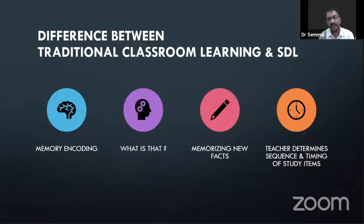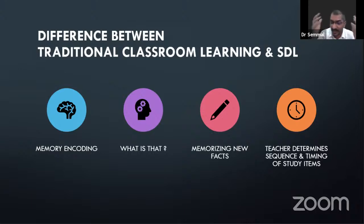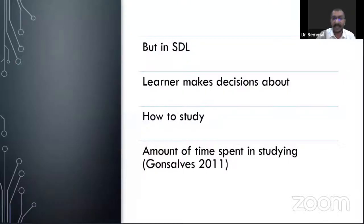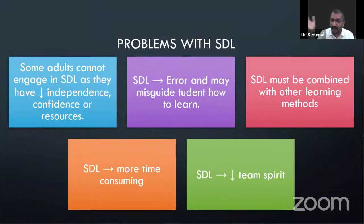Whatever I teach, students may or may not internalize it. But if you learn by yourself, the neurons entangle the information in a very sensible way. In traditional learning, teachers determine the sequence and timing of study — for example, my lecture is at nine, but the student wants to learn that topic in the morning. In SDL, the learner decides how to study and how much time to spend on each topic — more time on one theory, less on another.